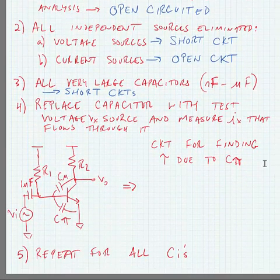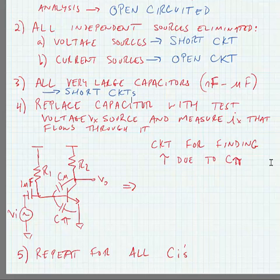Finally, what we're going to do is replace the capacitor that we're analyzing with a test voltage source Vx, and we're going to measure the current that flows through it. So, for instance, for the common emitter amplifier shown in this figure right here, the circuit for finding tau due to Cpi, for instance, would look something like the following.